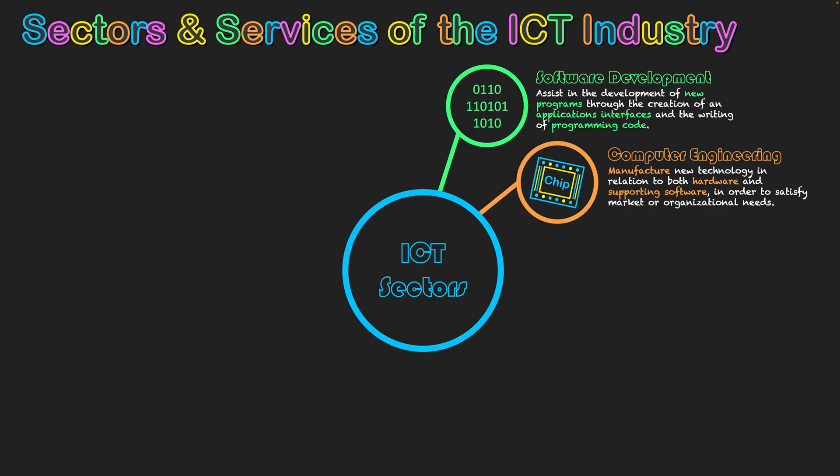A lot of computer engineering involves taking existing technology and making it more efficient for users or businesses, or minimizing the size of technology. iPads are always getting thinner, MacBooks are always getting thinner, and chips are getting smaller so we can make smaller laptops — that's all a part of computer engineering.